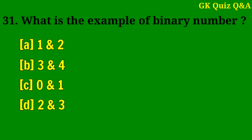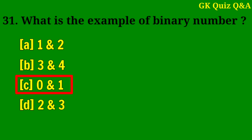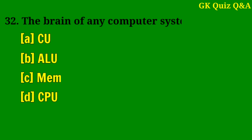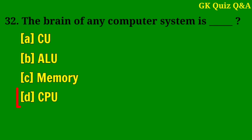What is the example of binary numbers? Answer C: 0 and 1. The brain of any computer system is? Answer D: CPU.